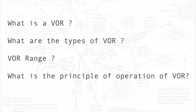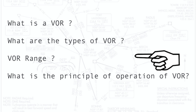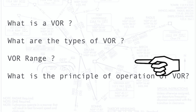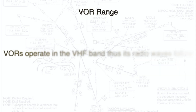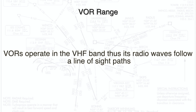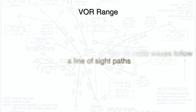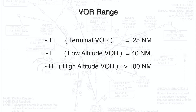Now we're going to look at VOR range. VORs operate in the VHF band, thus their radio waves follow a line-of-sight path. There are three categories. The T — terminal VOR — with a range of approximately 25 nautical miles, used for non-precision approaches.